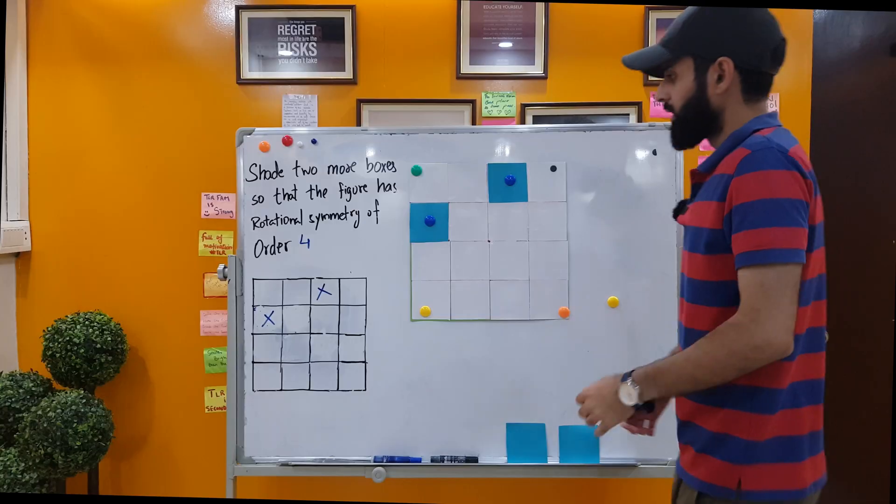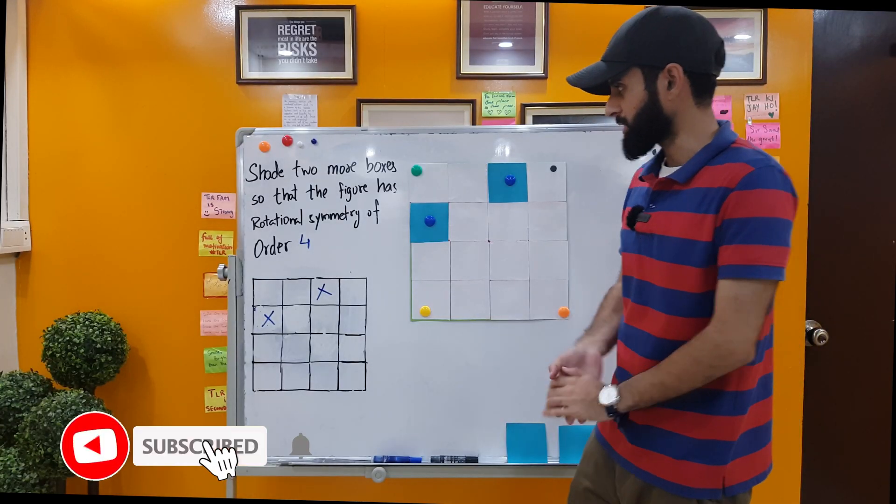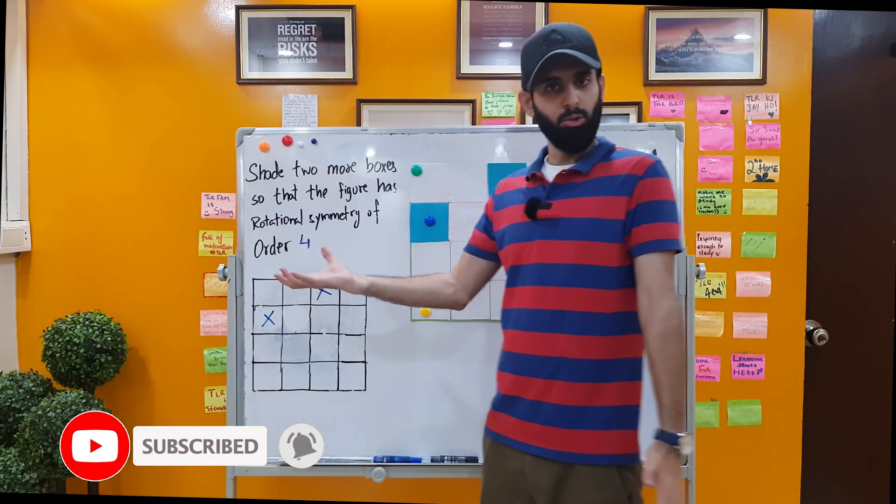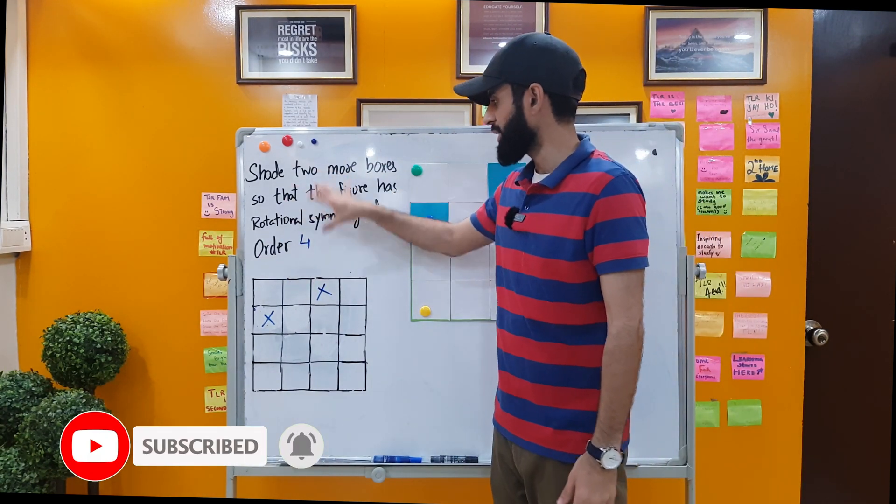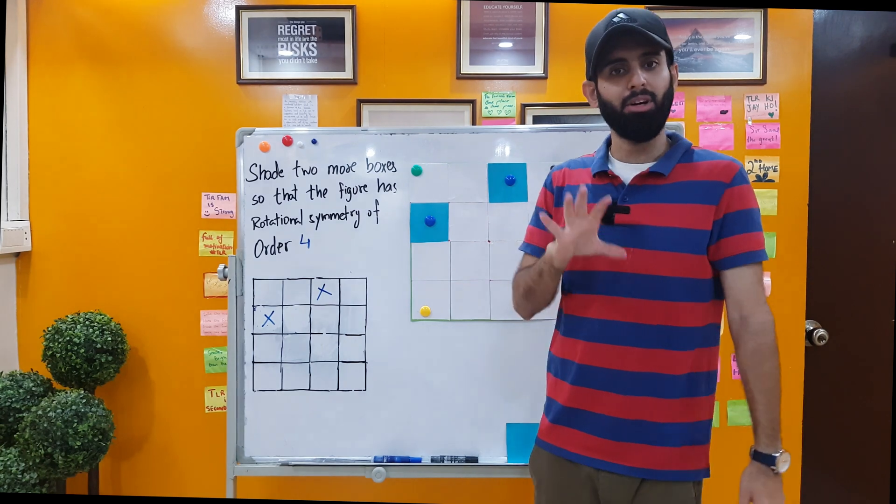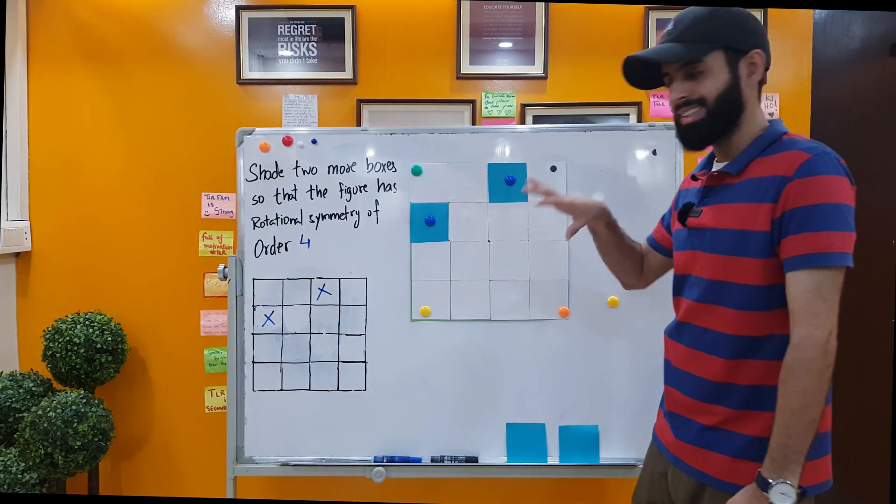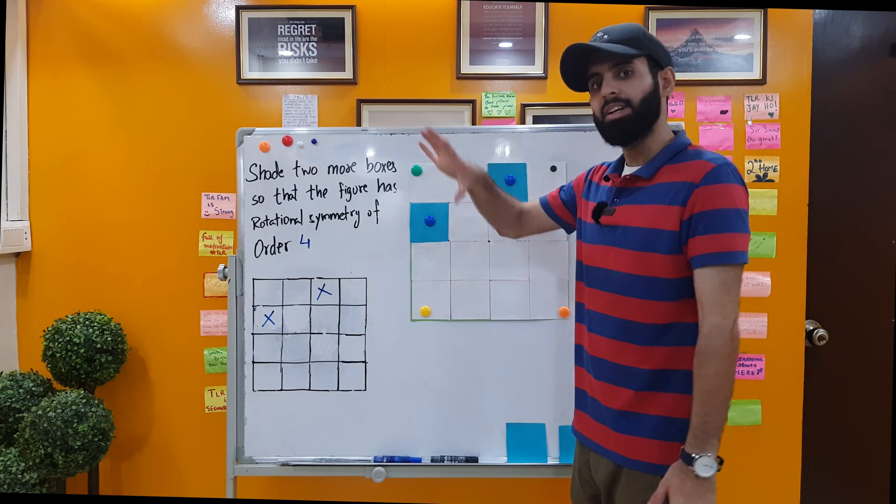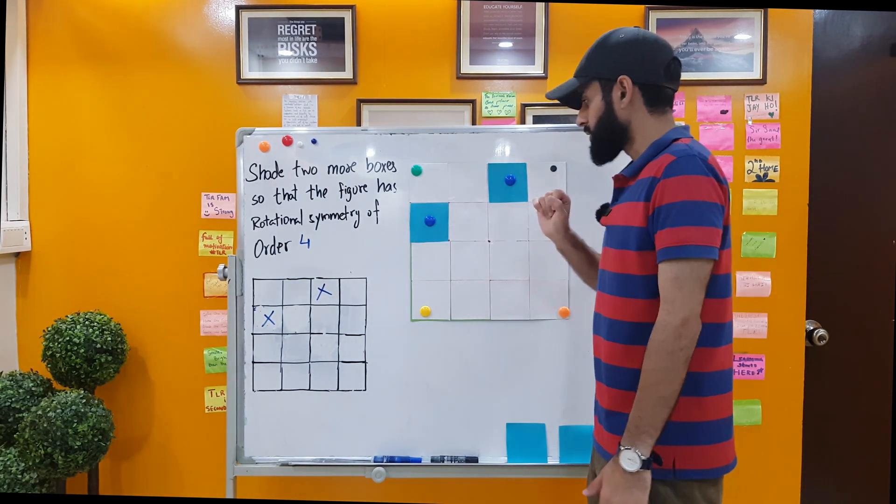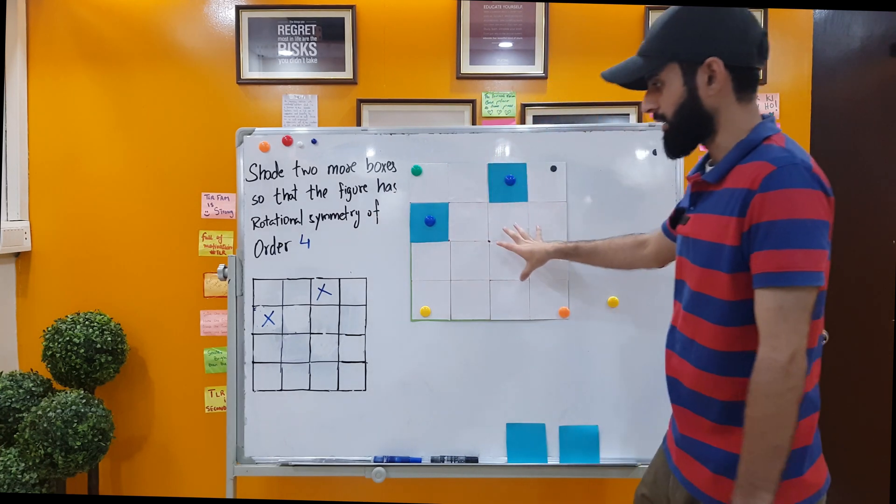All right, so here I have another past paper question and in this we can again shade two more boxes, but this time we need to make sure that the figure has rotation symmetry of order 4. Now this order 4 means that you should be able to see the exact same shape after every 90 degree turn.